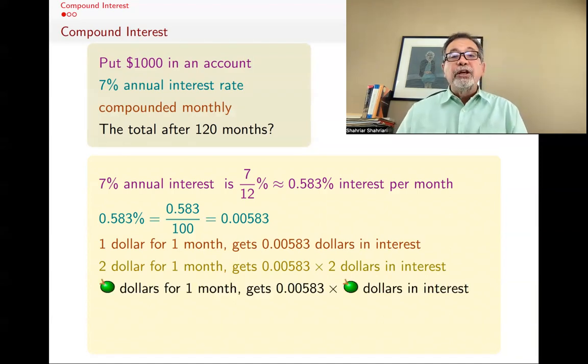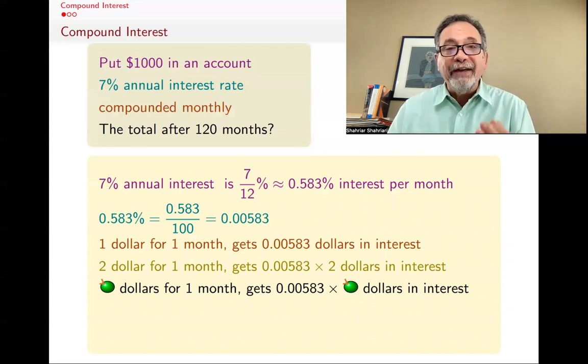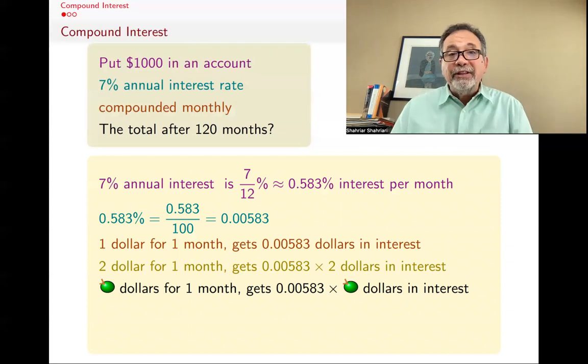If you had A dollars, you would get A times that. The point is that if you have A dollars in the bank for a month, then you get A times 0.00583 in interest. Now, that's the interest, but you also have your original amount there.